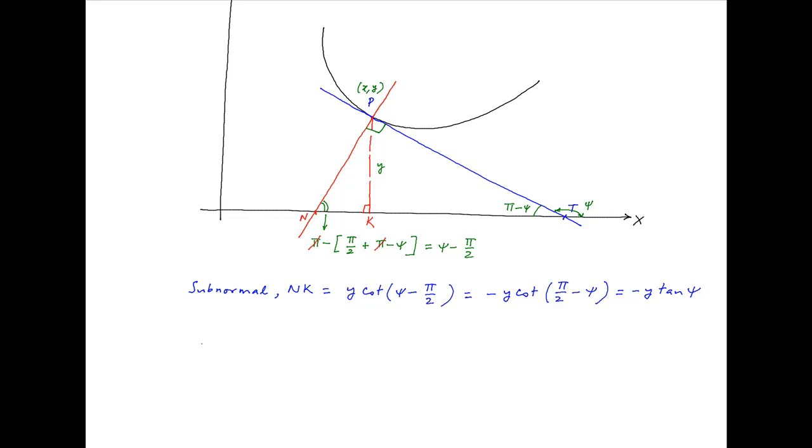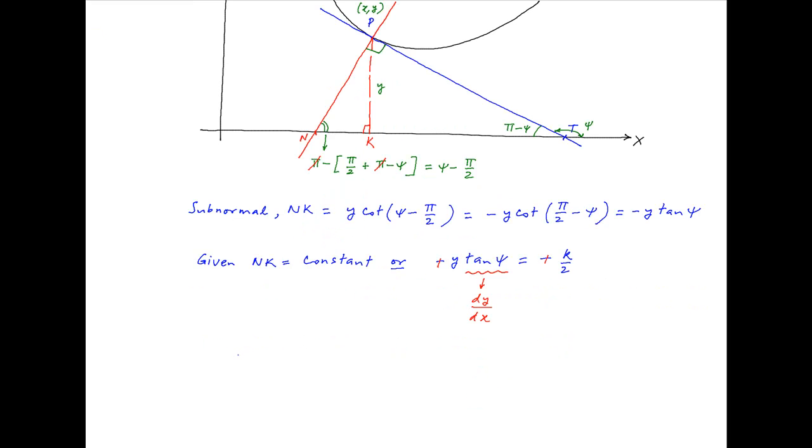Now we are given that the length of the subnormal is constant. And therefore, -y tan ψ is a constant. Let's assume that is -k/2. Now tan ψ is equal to the slope of the tangent at the point xy, is therefore equal to dy/dx.